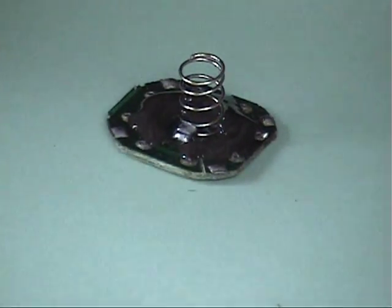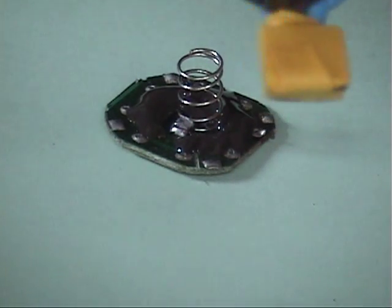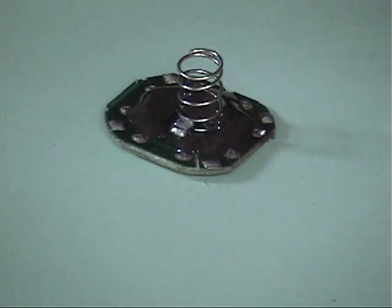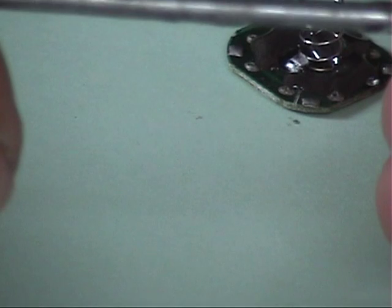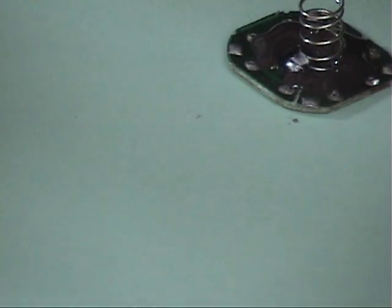At the same time I slather a little bit of JB weld around these wires. That way when you're working with this thing and you're putting it together in a minute, it's going to be real strong and you're not going to be able to twist and break the connections.